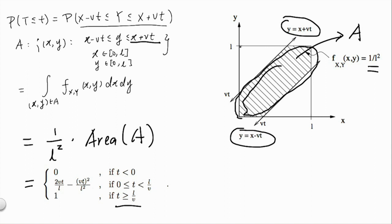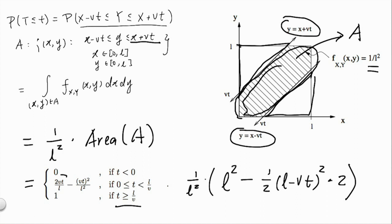Here's a simple way to calculate it. What we want is 1/L² times the area A. Area A can be viewed as the entire square L² minus whatever is not in area A, which is these two triangles. Each triangle has an area ½(L - vt)². This multiplied by 2, and after some algebra will give the answer.